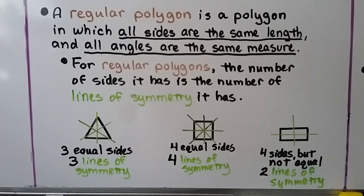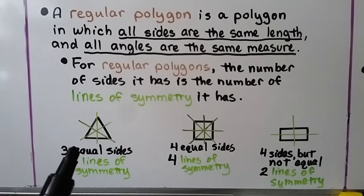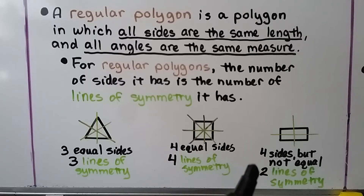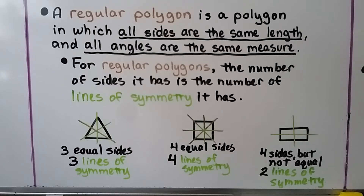A regular polygon is a polygon in which all sides are the same length and all angles are the same measure. For regular polygons, the number of sides equals the number of lines of symmetry. A triangle with three equal sides has three lines of symmetry. A square has four equal sides and four lines of symmetry. But a rectangle has four sides that are not all equal, so it only has two lines of symmetry.